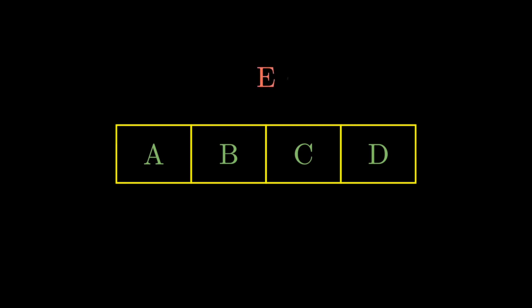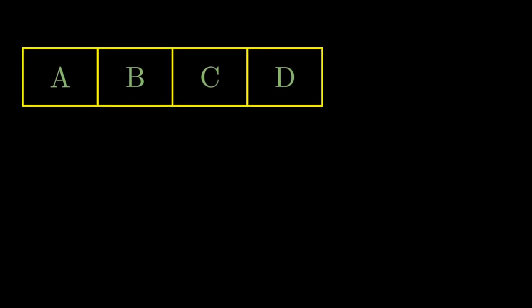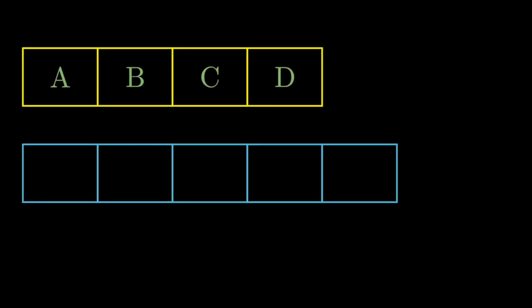The first thing that comes to mind is we can just create a new fixed length array to accommodate additional data. Once the original fixed length array reaches its capacity, we create a new array of length one more than the previous array.